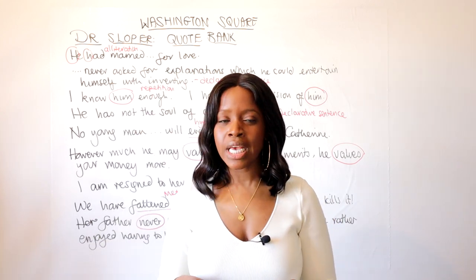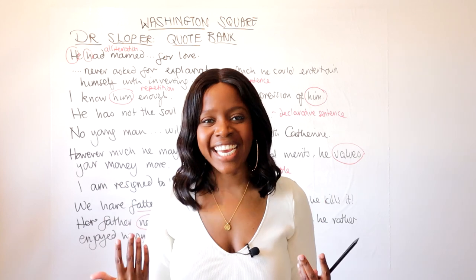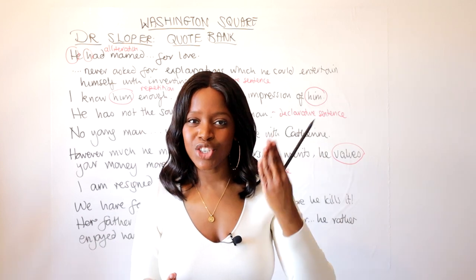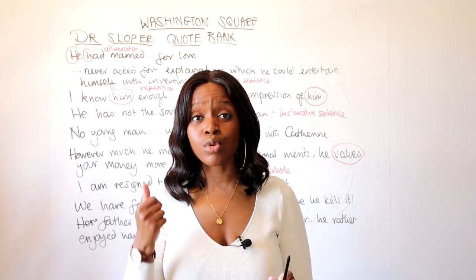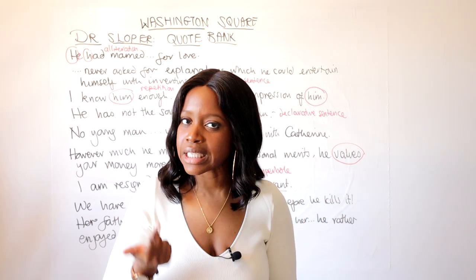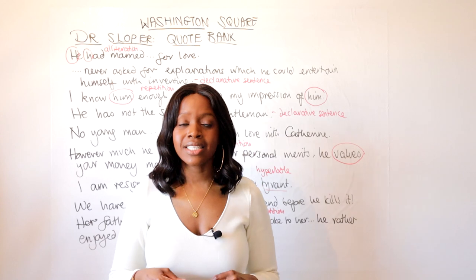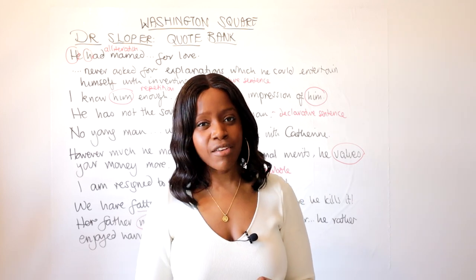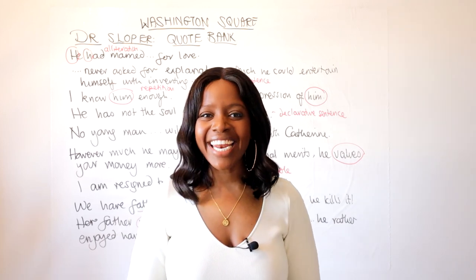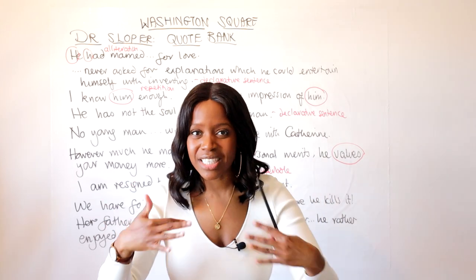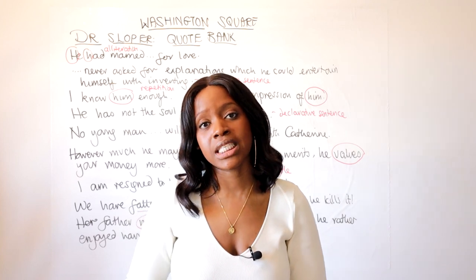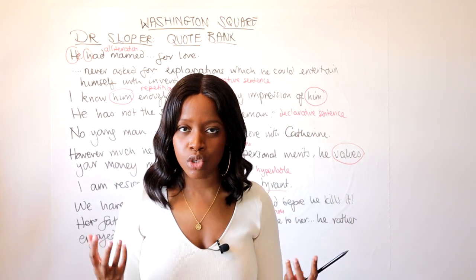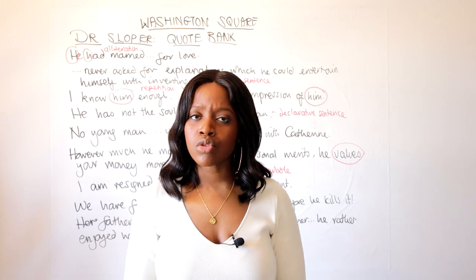Dr. Sloper is the primary antagonist. Our protagonist is Catherine, and our two principal antagonists or villains are Dr. Sloper, her father, and Maurice Townsend. Dr. Sloper is an esteemed physician — a doctor in 1800s New York society was very well placed and wealthy. He functions as the gatekeeper of upper class elite society and constantly tries to cast Maurice out, seeing through his mercenary intentions and viewing him as not a gentleman.